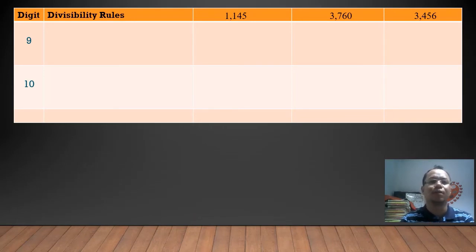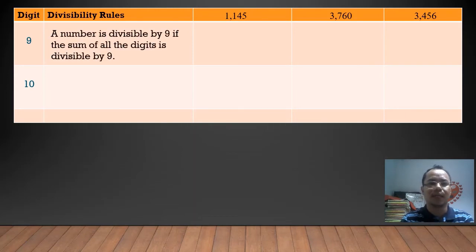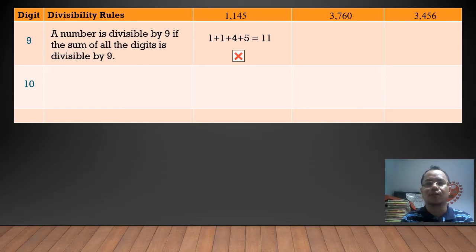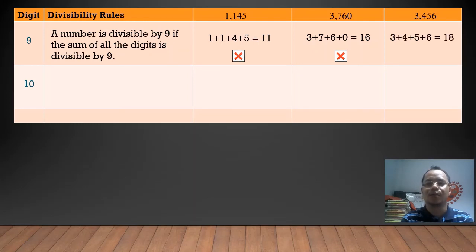How can we determine if a number is divisible by 9? A number is divisible by 9 if the sum of all the digits is divisible by 9, similar to the rule for 3. For 1,145: 1+1+4+5 = 11, and 11 is not divisible by 9. Therefore, 1,145 is not divisible by 9. For 3,760: 3+7+6+0 = 16, not divisible by 9. For 3,456: 3+4+5+6 = 18, and 18 is divisible by 9. Therefore, 3,456 is divisible by 9.